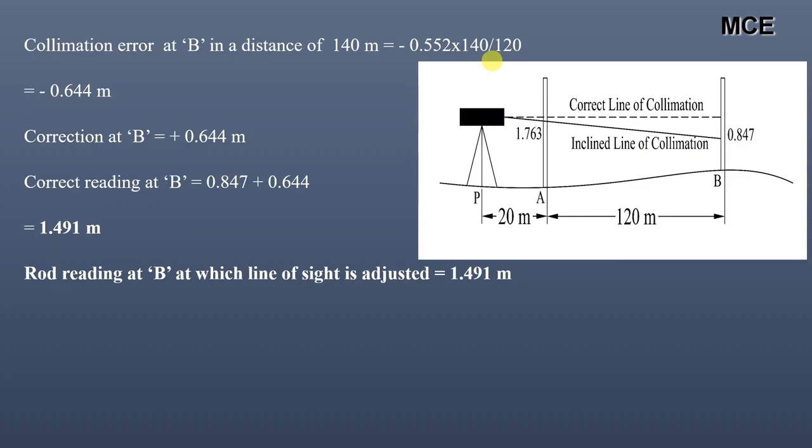So the rod reading at B at which the line of sight is adjusted equals 1.491 meters. You can check the difference between the two levels: the difference between A and B is 1.855 minus 1.491 which equals 0.364 meters, which is the same as when the level was exactly midway between the two stations.